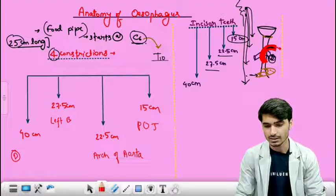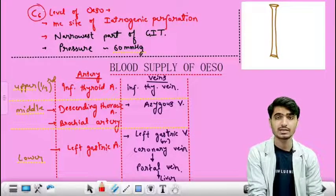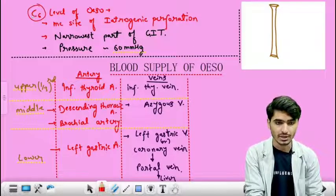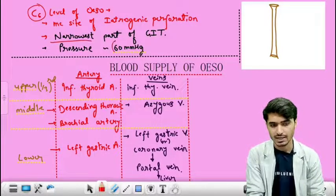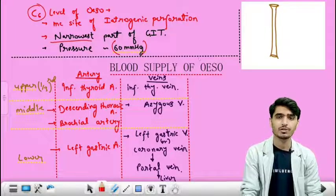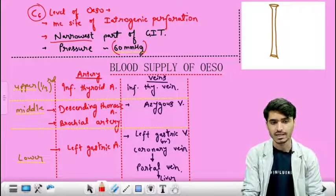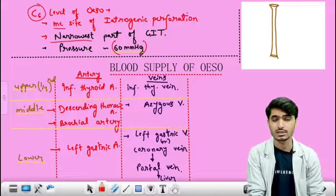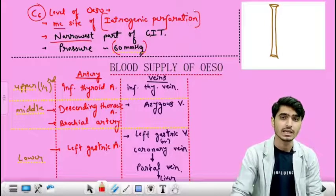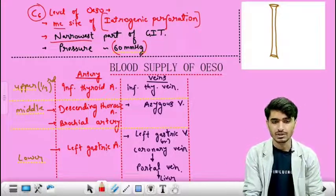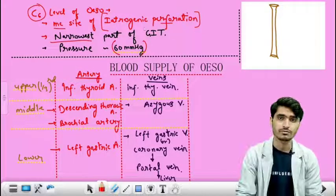The part of the esophagus at the C6 level — the pharyngoesophageal junction — is the narrowest part of the GIT, having a pressure of 60 mmHg because it contains the upper esophageal sphincter. It is also the most common site for iatrogenic perforation when passing the upper endoscopic tube.